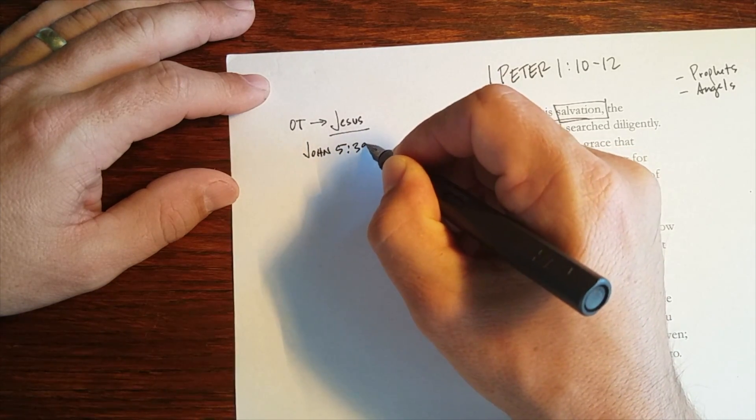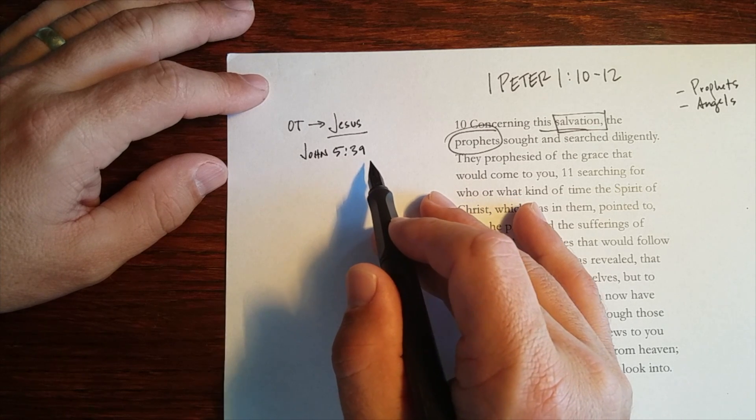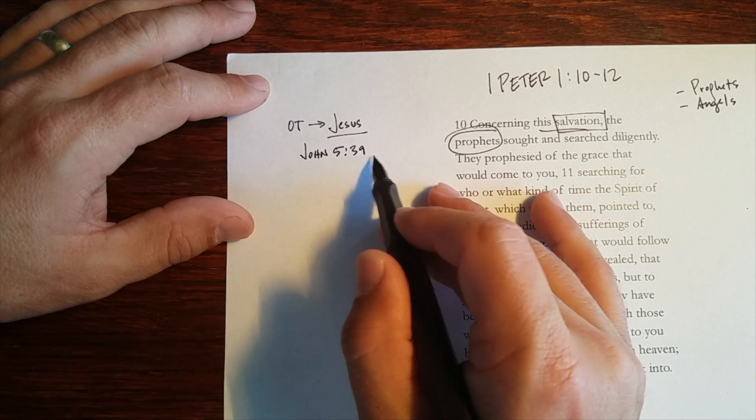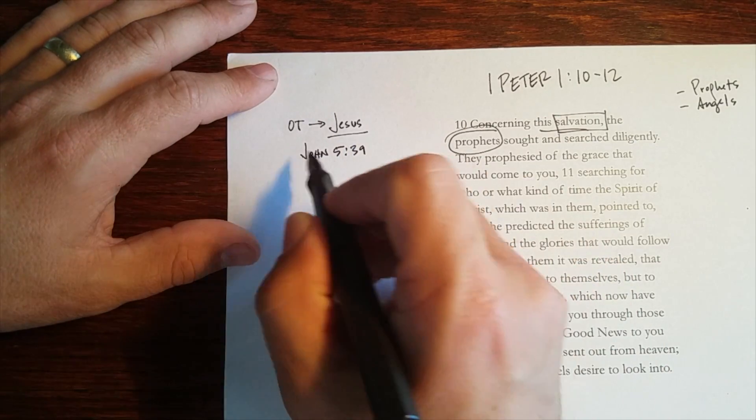The first is John 3:39, where Jesus says, he's talking to the Pharisees and he says, you search the scriptures, thinking that in them you have life, not knowing that these are they that testify of me. So the scriptures testify of Christ.